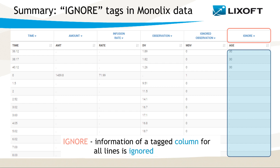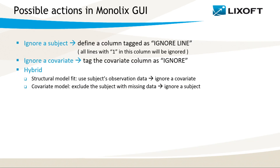Using these column tags, Monolix can handle missing covariates in the following ways. First, I can ignore an individual with missing data by defining a column with ones in lines that correspond to that subject and tagging this column as ignore line. Or, if the information carried by a covariate is less important than the observations, I can ignore the covariate by tagging the covariate column as ignore. A hybrid approach is also possible: I can use the observations to fit the structural model by first ignoring the covariate, then exclude subjects with missing covariate information using an ignore line column, and perform covariate search using the remaining subjects.